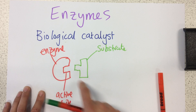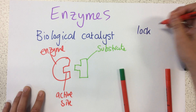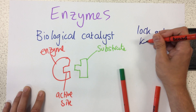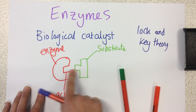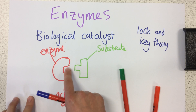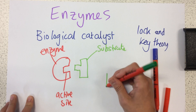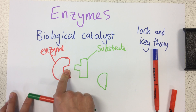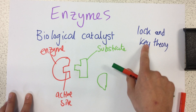This is why it's called the lock and key theory — because the substrate acts like a key and the active site acts like a lock. The active site is very specific and can't fit just any substrate. If we had a different substrate with a different shape, it would not fit into this active site.